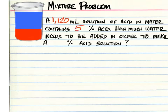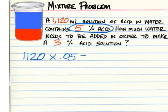How much water needs to be added in order to make a 3% acid solution? The solution for the practice problem: we need to figure out how many milliliters of acid is 5% of 1,120. So 1,120 times 0.05. 1,120 times 0.05 is 56. That's 56 milliliters of acid.